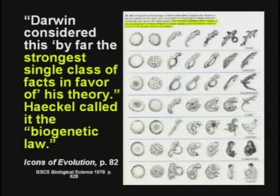The guy who made up this idea, his name is Ernst Haeckel. Haeckel called this idea the biogenetic law, which means as animals develop inside the mother, they go through the stages of evolution. All you've got to do is memorize the word FARM — F-A-R-M: fish, amphibian, reptile, mammal. That's the way they say it happened.